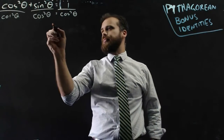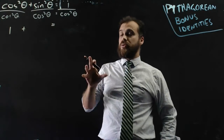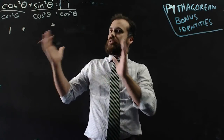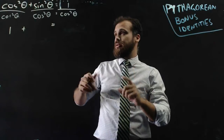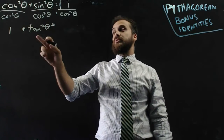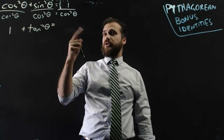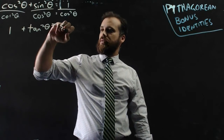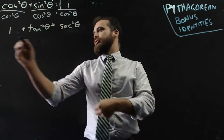Simplifying a little bit: cos squared theta over cos squared theta is 1, plus sin squared theta over cos squared theta. Sin theta over cos theta is tan theta — if I split this up, I get sin theta over cos theta times sin theta over cos theta, which is tan theta times tan theta. So sin squared theta over cos squared theta equals tan squared theta. Now, 1 over cos theta is sec theta, and 1 over cos squared theta is sec squared theta. So here's one of our bonus identities: 1 plus tan squared theta equals sec squared theta.